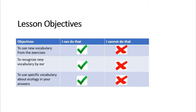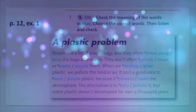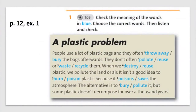And the last objective: to use specific vocabulary about ecology in your answers — использовать особые слова по теме экология в ваших ответах. Open your books at page 12 and find exercise 1. Там дан текст 'A Plastic Problem' — проблема пластика. Ваша задача прослушать этот текст и из слов, выделенных синим, выбрать одно верное — то которое вы услышите в озвучке.